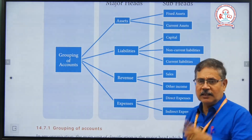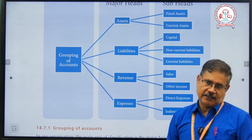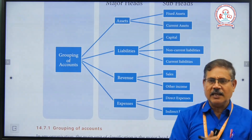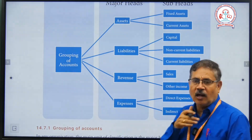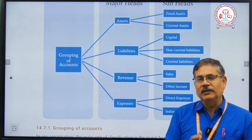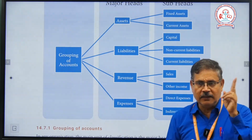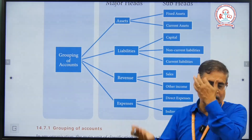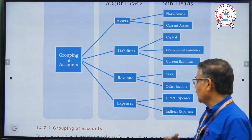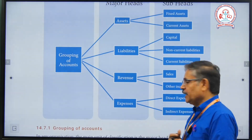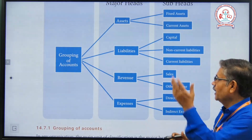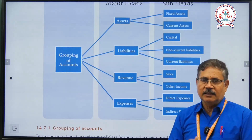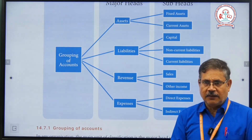Assets have two types: fixed assets and current assets. Liabilities include capital — which is investment from the investor or owner — non-current liabilities, and long-term current liabilities within a year. Revenue includes two types: sales and income — such as other income, interest, dividend, and other remuneration. Expenses include direct expenses and indirect expenses. So the four grouping heads are: assets, liabilities, revenue, and expenses.